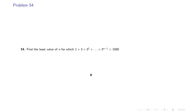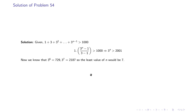Problem 54: Find the least value of n for which 1 + 3 + 3² + … up to 3^n is greater than 1000. The sum is (3^n − 1) / (3 − 1) > 1000, so 3^n > 2001 (since the denominator 2 multiplied with 1000 is 2000, and 3^n − 1 > 2000 gives 3^n > 2001). We know 3^6 = 729 and 3^7 = 2187, so the least value of n is 7.